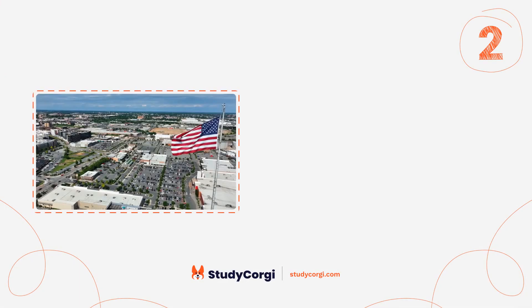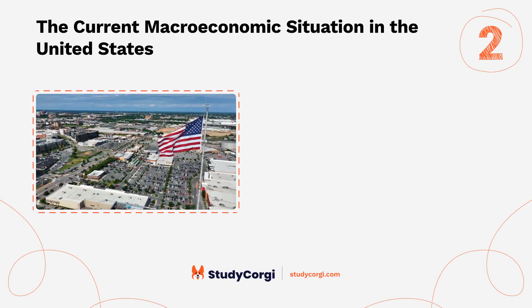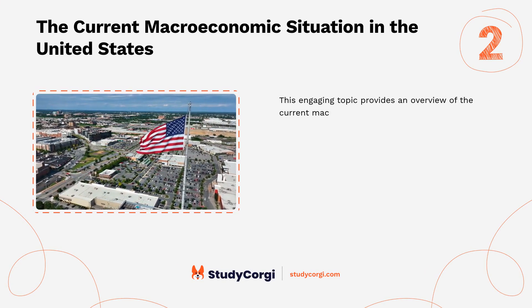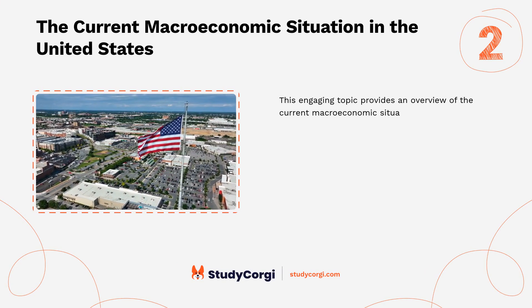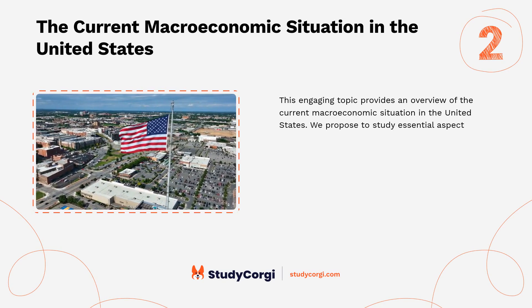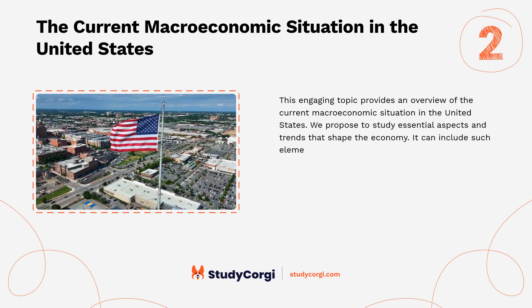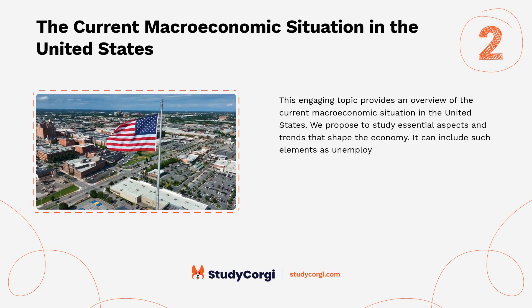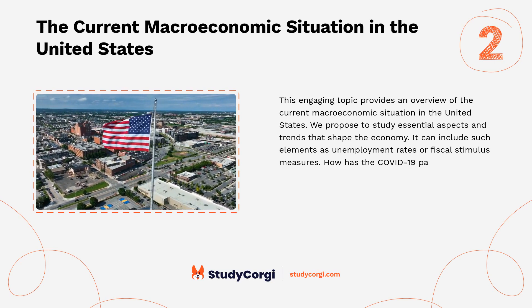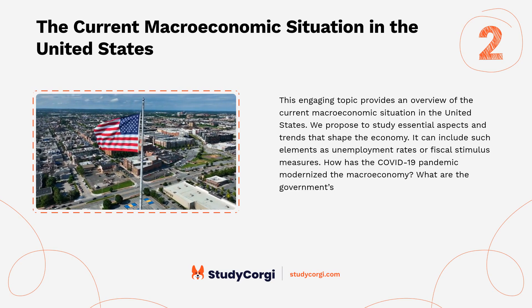Topic two: The current macroeconomic situation in the United States. This topic provides an overview of the current macroeconomic situation in the United States, studying essential aspects and trends that shape the economy, including unemployment rates and fiscal stimulus measures. Key questions include how the COVID-19 pandemic has transformed the macroeconomy and what government strategies address the ongoing economic situation.